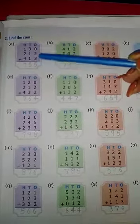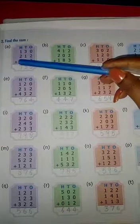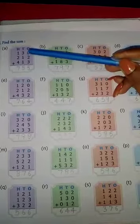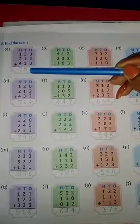So we will add first 1's column, then 10's column and then 100's column. So if we add 0 plus 2 plus 3, then the answer is 5.